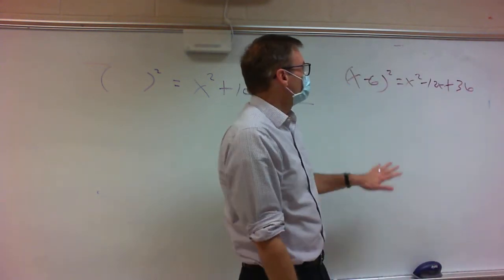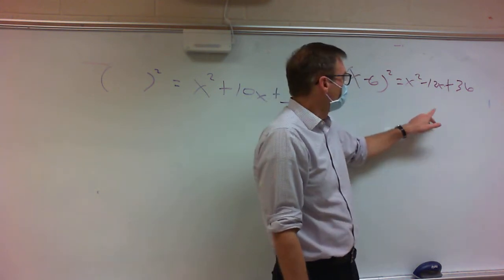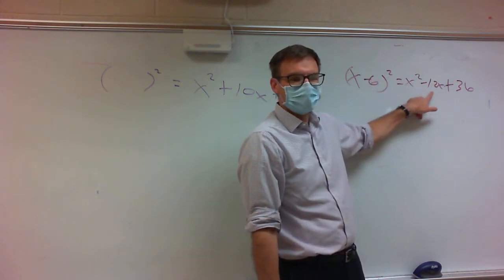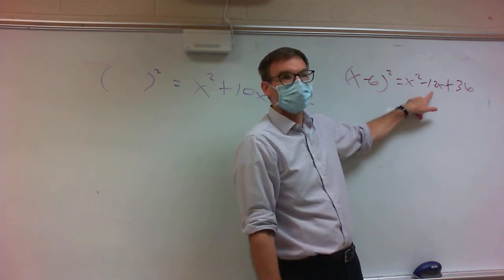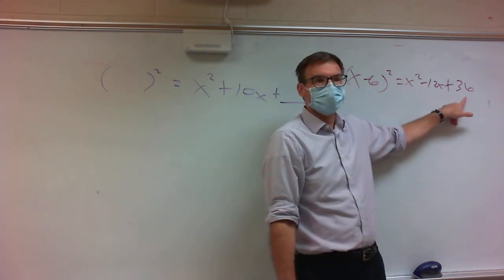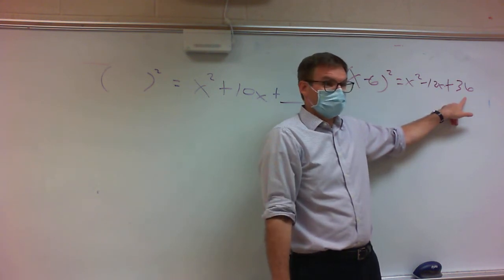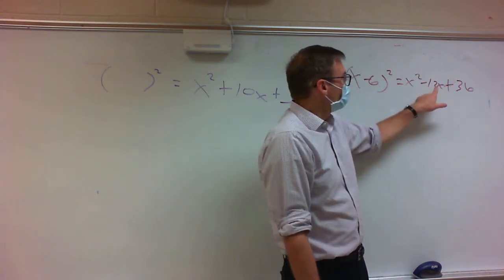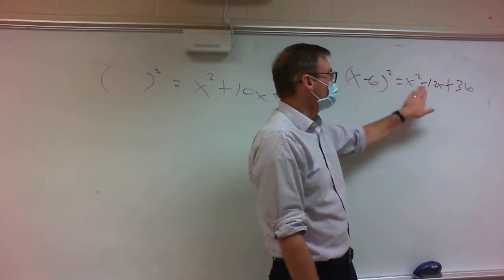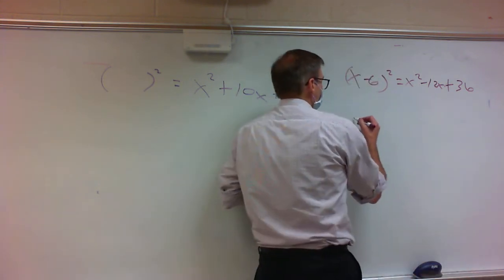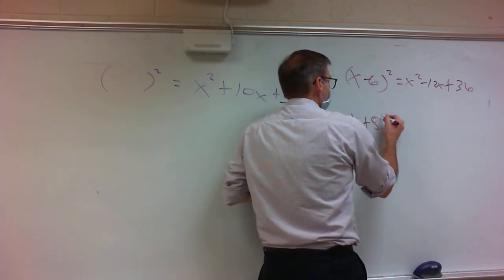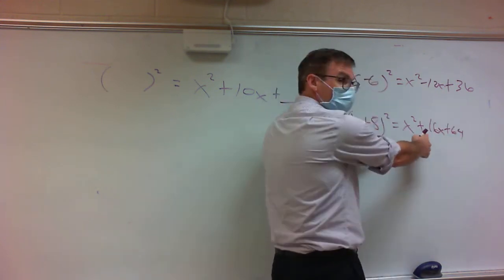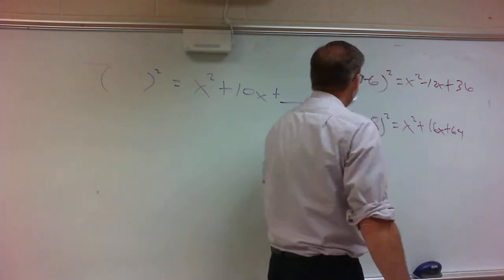All three of these numbers are related. The relationship between 6 and 12x: it's multiplied by 2. The relationship between 6 and 36: it's squared. So even though there are three different numbers, they're all related. If you knew one, you could find the others. For example, x plus 8 squared gives x squared plus 16x plus 64 — you double it for the middle term, then square it for the last term.